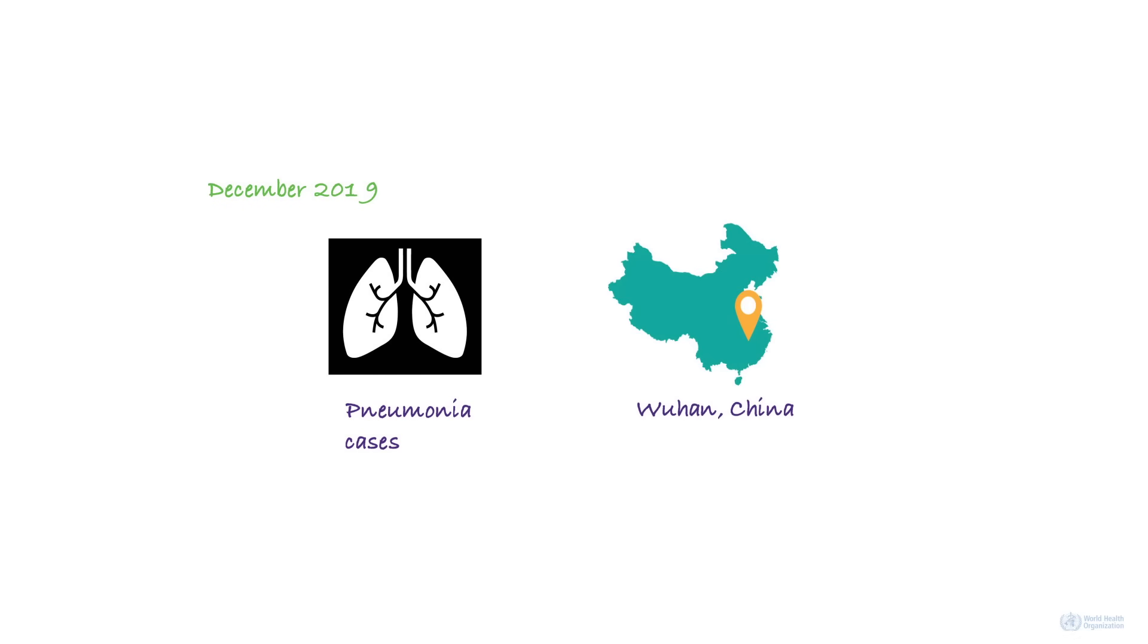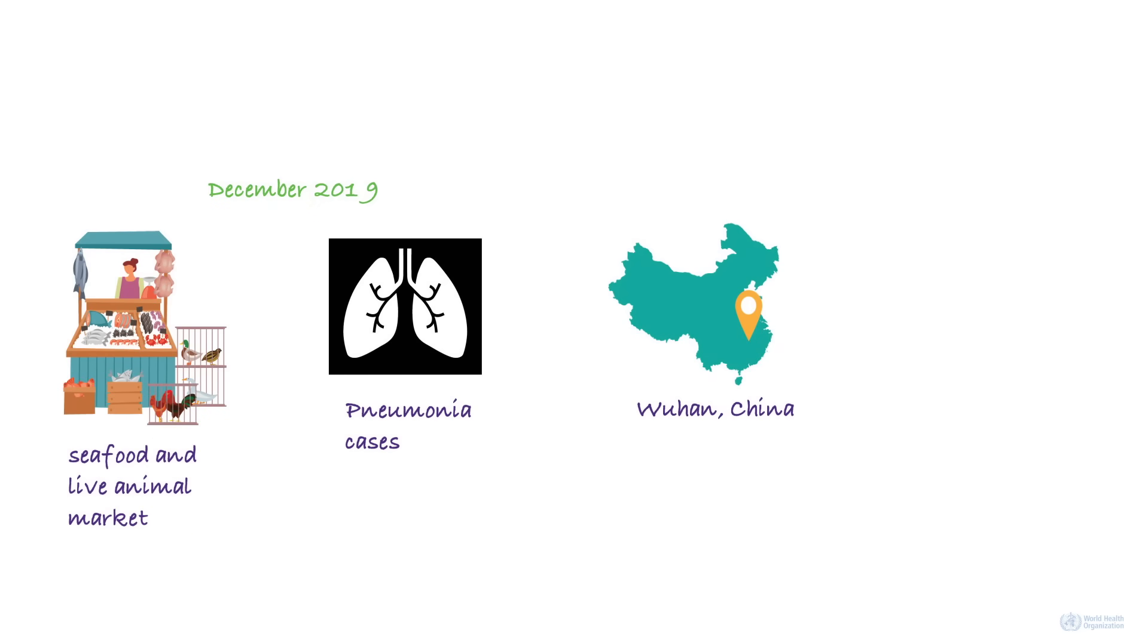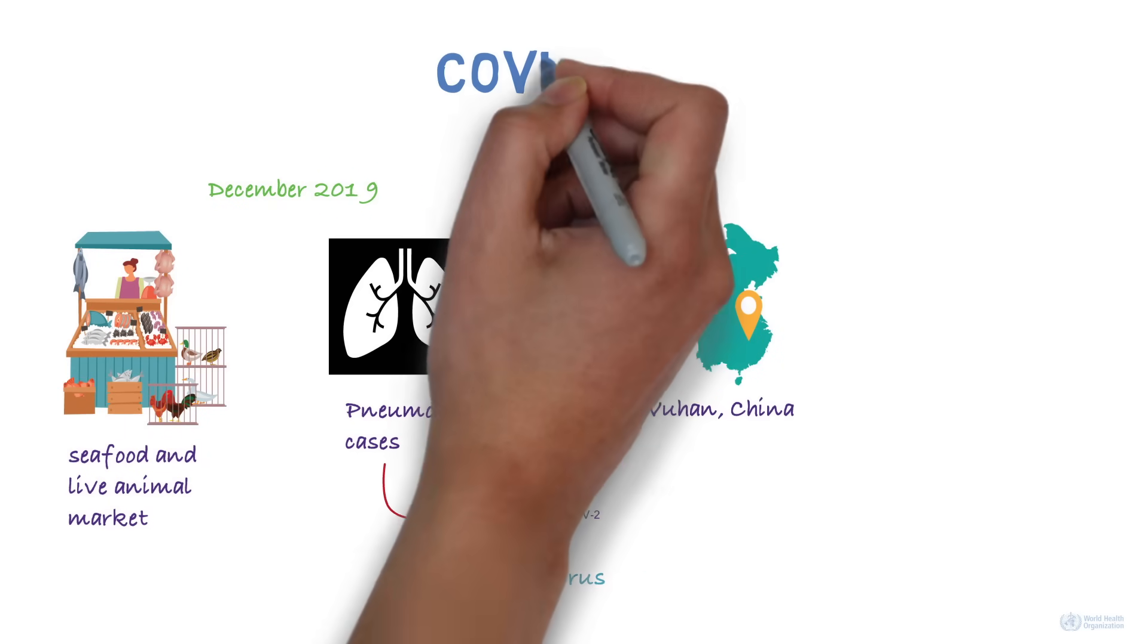In December 2019, there was a cluster of pneumonia cases in the city of Wuhan in China. Some of the early cases had reported visiting or working in a seafood and live animal market in Wuhan. Investigations found that the disease was caused by a newly discovered coronavirus. The disease was subsequently named COVID-19.